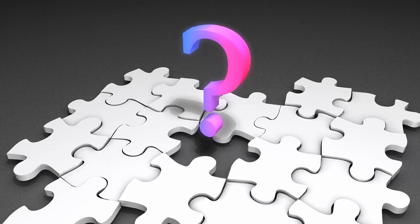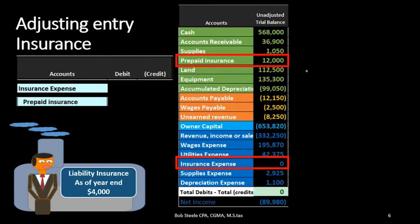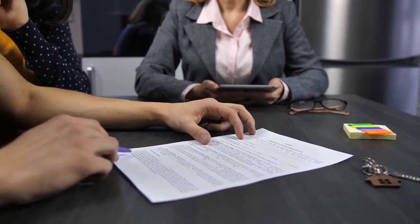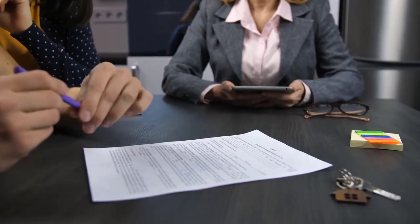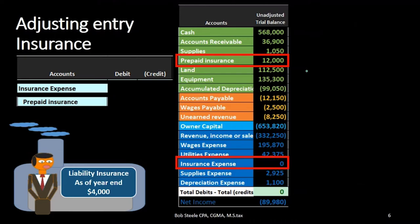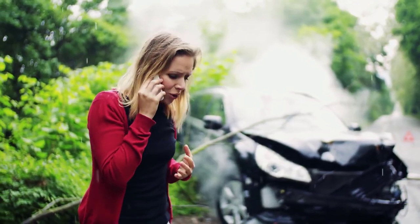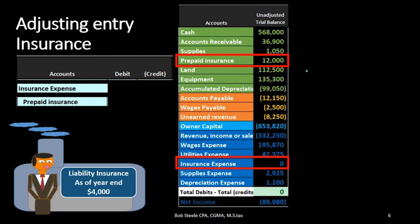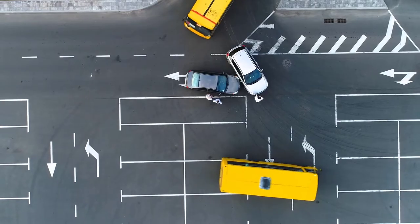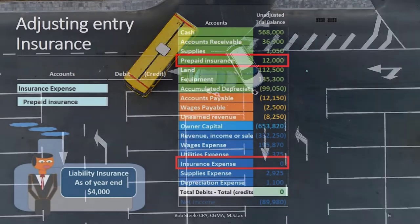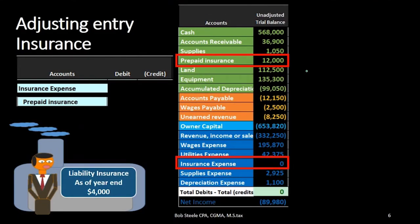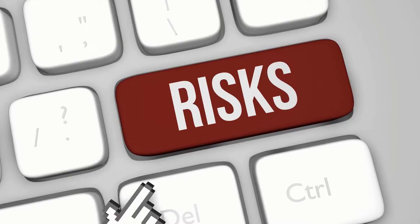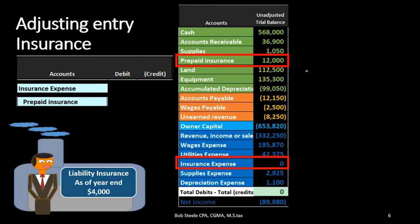Now let's talk about why. What is prepaid insurance and how did it get there? Prepaid insurance means that when we purchase the insurance, we have not yet consumed it. By definition, when we buy insurance we haven't consumed it — there's no such thing as getting into a car accident and then buying insurance to cover that accident. The insurance covers us in the future. We're using the insurance when it has covered us for a specific time period — we're guarding against risk. As the insurance guards us against risk, that's the time period when we should expense it; that's when it has been consumed.